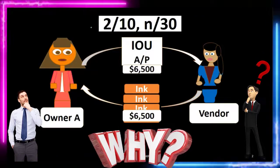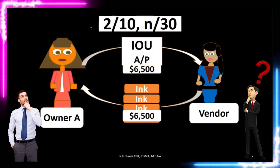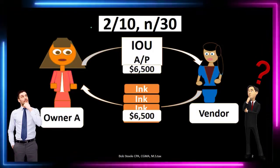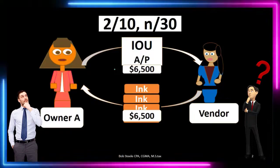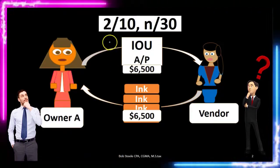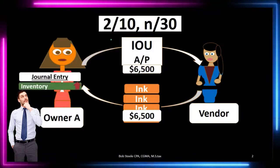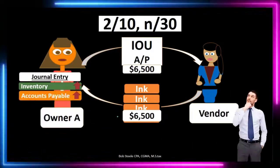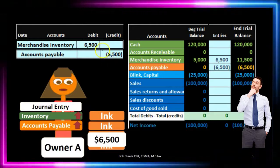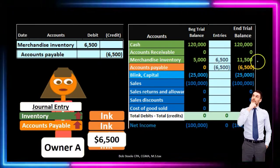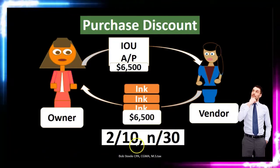When we record the original transaction we don't even really need to know the terms, which can be confusing. We see these terms in a problem but we don't use them when making the original transaction, because we're going to post it at the full sales price. The journal entry is an increase to inventory for six thousand five hundred and an increase to accounts payable — a debit to merchandise inventory and a credit to accounts payable — increasing the merchandise inventory and the liability.